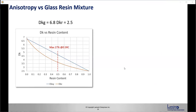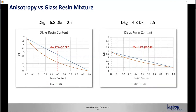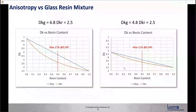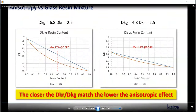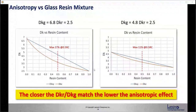Here I'm plotting anisotropy versus glass/resin mixture. Using DK glass of 6.8 and DK resin of 2.5, we see that at 50% resin content, the maximum anisotropy is 27%. If we keep everything the same but change the DK of the glass to match the resin more closely, the maximum anisotropy at 50% reduces to 11%. So the closer the DK of resin to DK of glass, the lower the anisotropic effect.